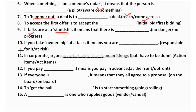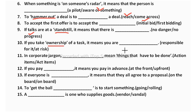If you take ownership of a task, it means you are taking responsibility for it. So if you take ownership of something, you are responsible for it. Responsible is the correct answer.